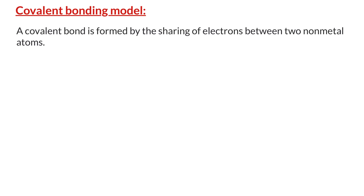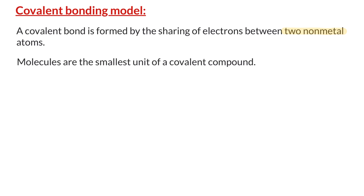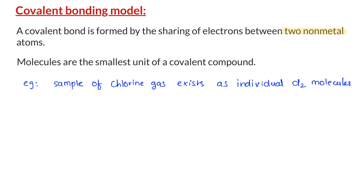Now we will discuss the covalent bonding model. A covalent bond is formed by the sharing of electrons between two nonmetal atoms. Contrary to ionic compounds, covalent compounds exist as molecules, which are the smallest unit of a covalent compound. For example, if you take a sample of chlorine gas, it exists as individual Cl₂ molecules.